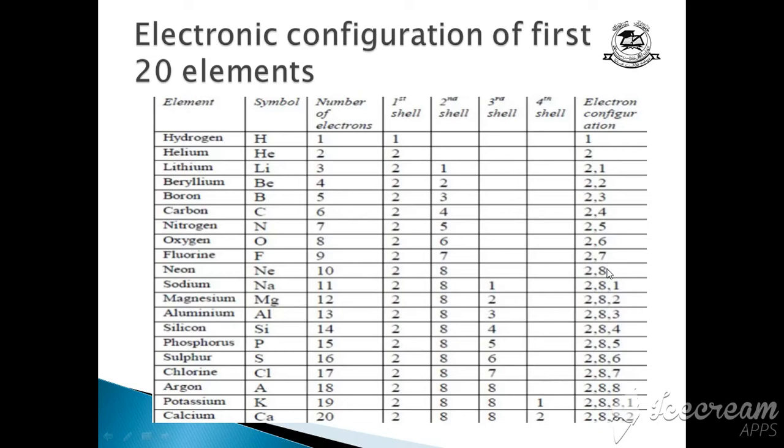look at neon. Neon has 10 electrons. 2 in first shell and 8 in next shell. Then sodium. Sodium has 11. So, 2 and 8, then it will move to third shell.